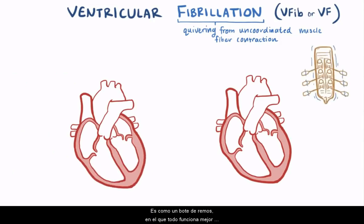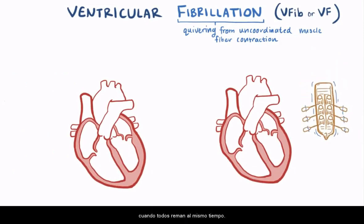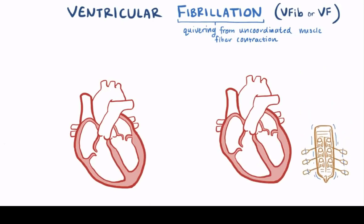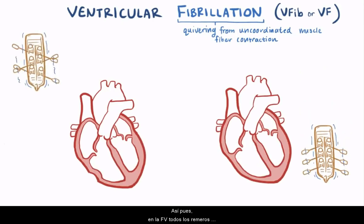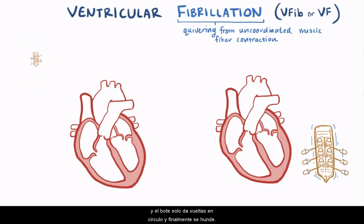It's kind of like a rowboat — it works best when everyone rows at the same time. Well, with VF, all the rowers stop rowing together and just row whenever they want, and the boat just moves in circles and eventually sinks.